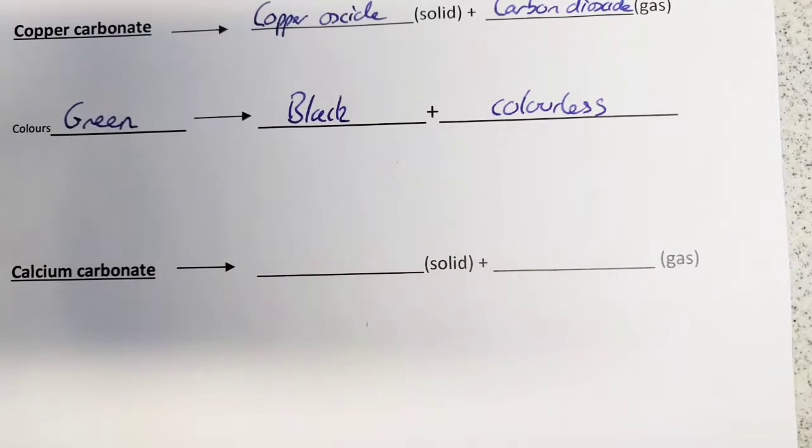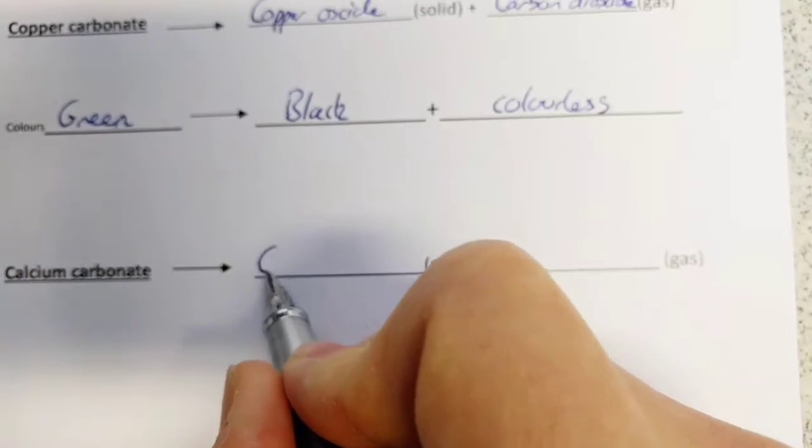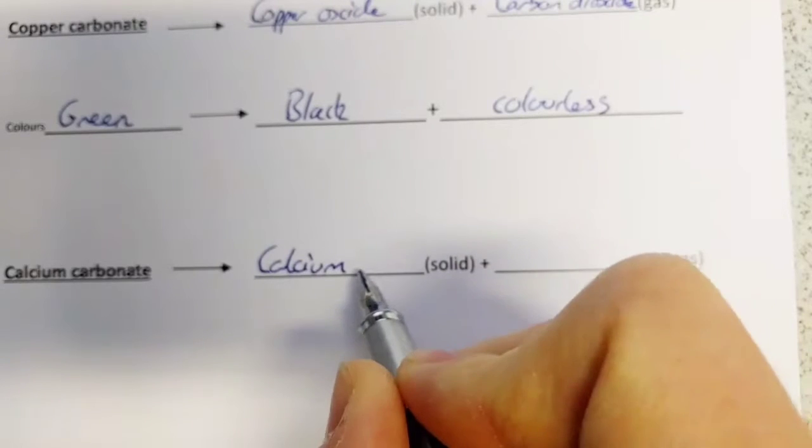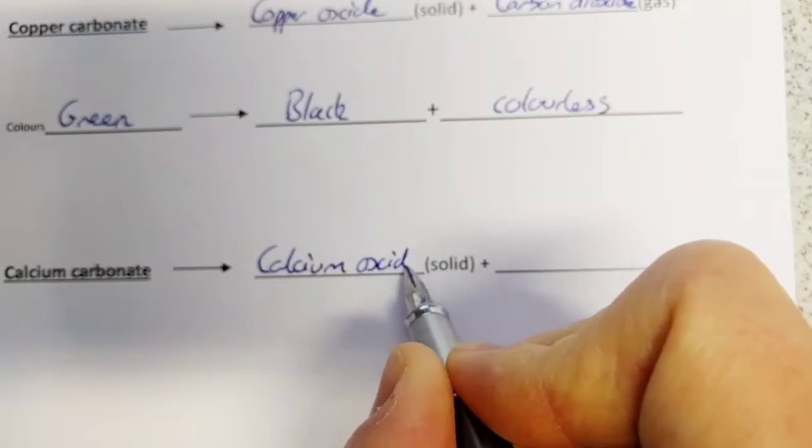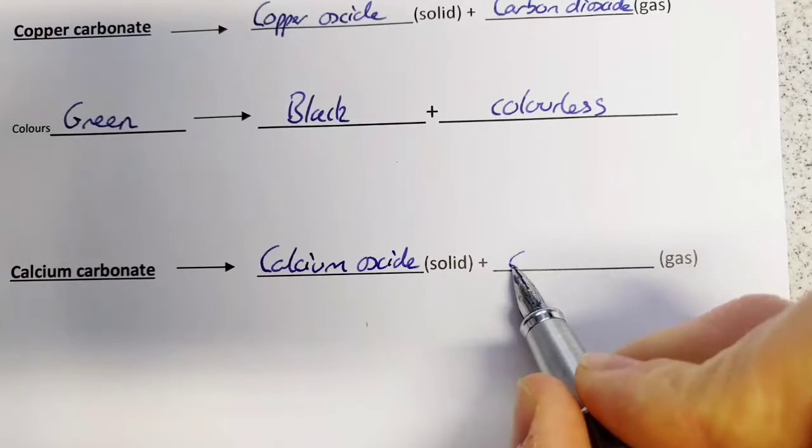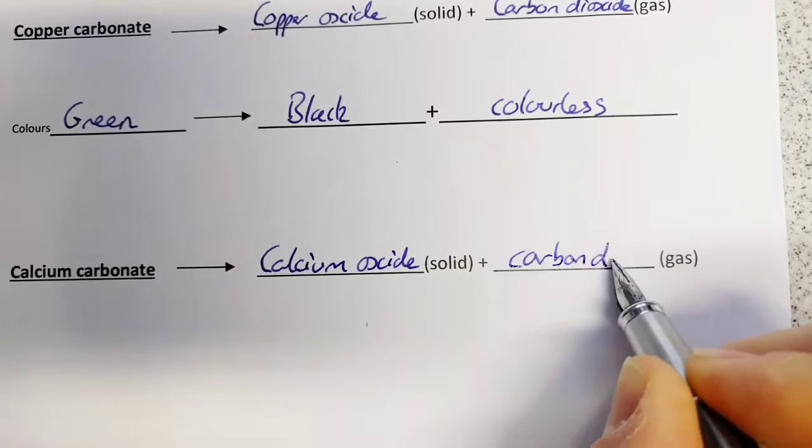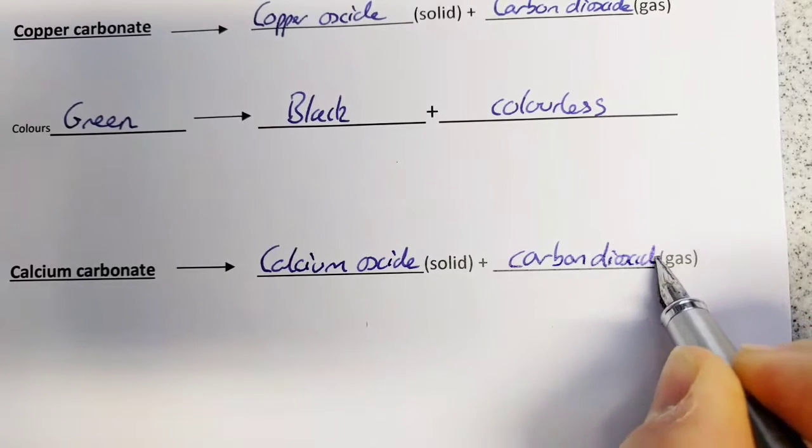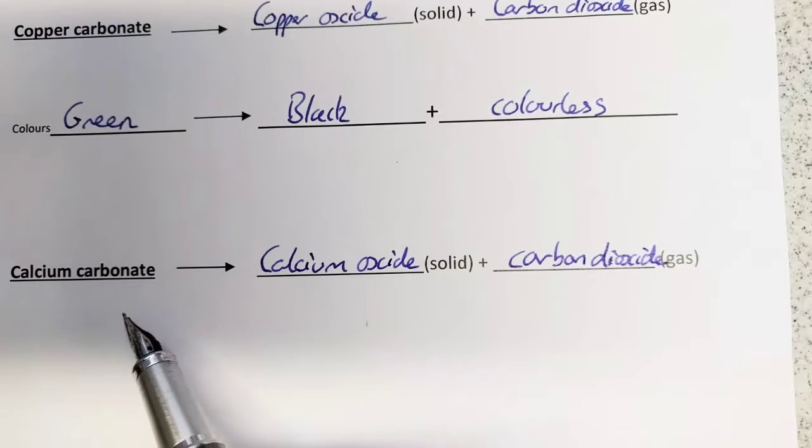Calcium carbonate, when it breaks down, forms calcium oxide which is also a white powder, and it releases carbon dioxide which is a colorless gas. So you start off with a white powder, you finish with a white powder and a colorless gas that you can't see has been released. They don't ask you about the colors or any color changes with the thermal decomposition of calcium carbonate.